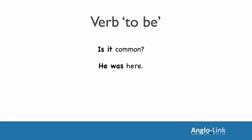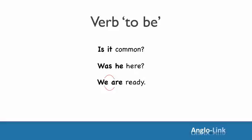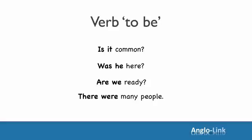Let's look at another one. 'He was here.' Put 'was' before 'he.' Was he here? 'We're ready.' 'Are' goes before 'we.' Are there many people?